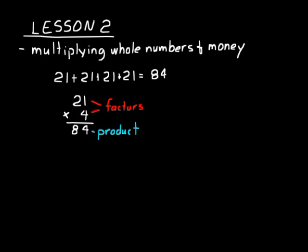In our example, twenty-one times four, we multiplied twenty-one by a one-digit number. What if we multiplied it by a two-digit number? We did twenty-one times fourteen instead of twenty-one times four. We basically multiplied twenty-one twice — once by the four, and once by ten, because that one is in the tens place. So we've broken up that fourteen into a ten and a four.